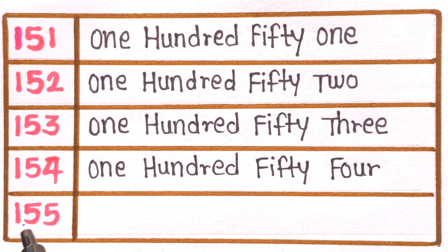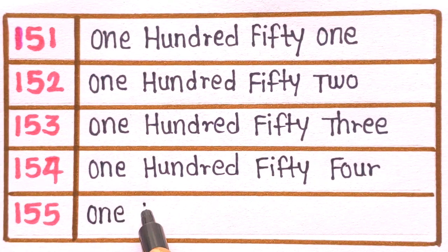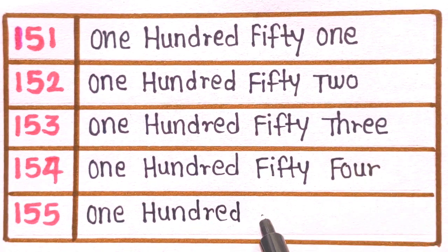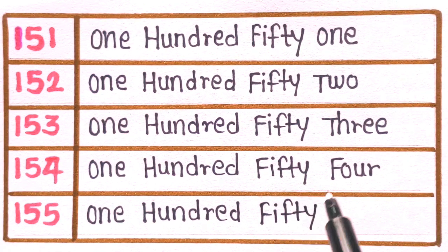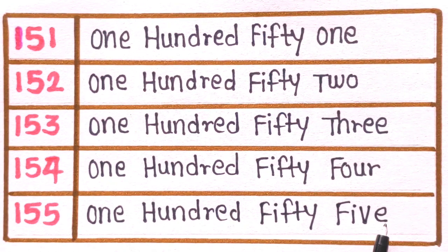Next is 155. O-N-E, one. H-U-N-D-R-E-D, one hundred. F-I-F-T-Y, fifty. F-I-F-E. 155 is one hundred fifty five.